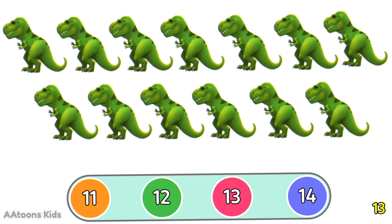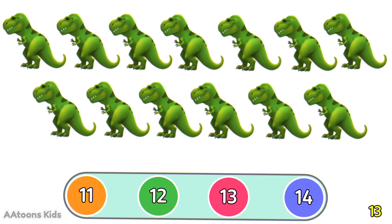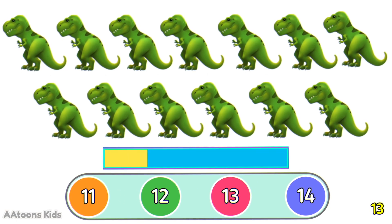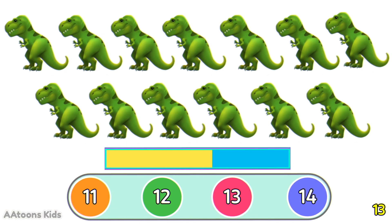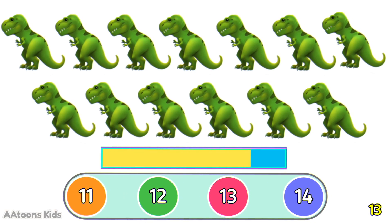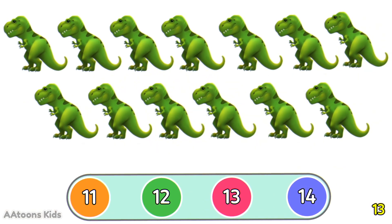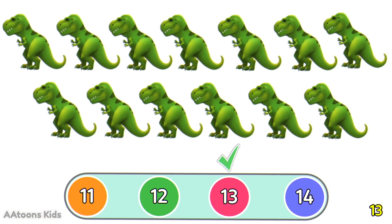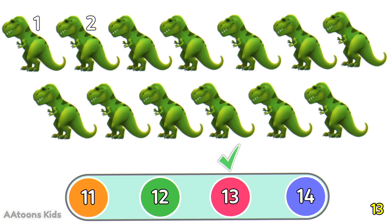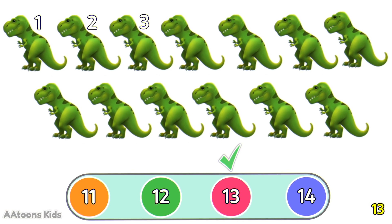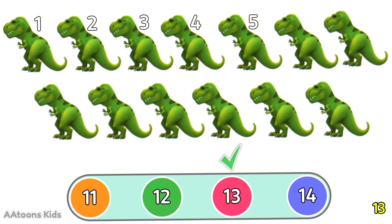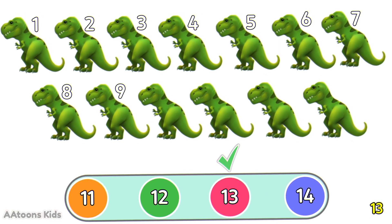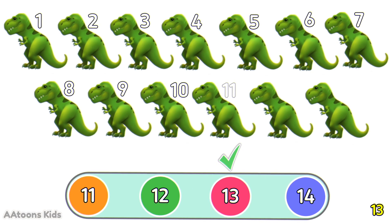How many dinosaurs can you see in the picture? Count them. 13 dinosaurs. Let's count them: 1, 2, 3, 4, 5, 6, 7, 8, 9, 10, 11, 12, 13. 13 dinosaurs.